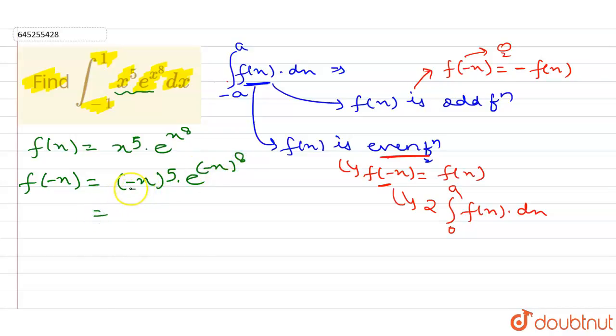So here there is minus sign and power is odd, so I can write it as minus of x power 5, into e power minus x power 8. Here power is even, so minus gets replaced.